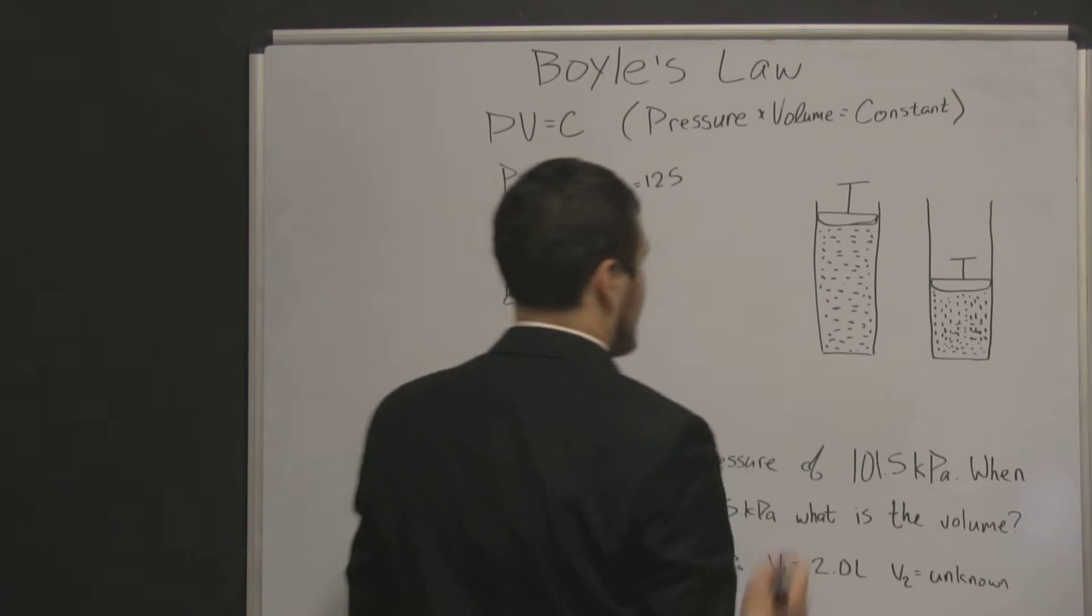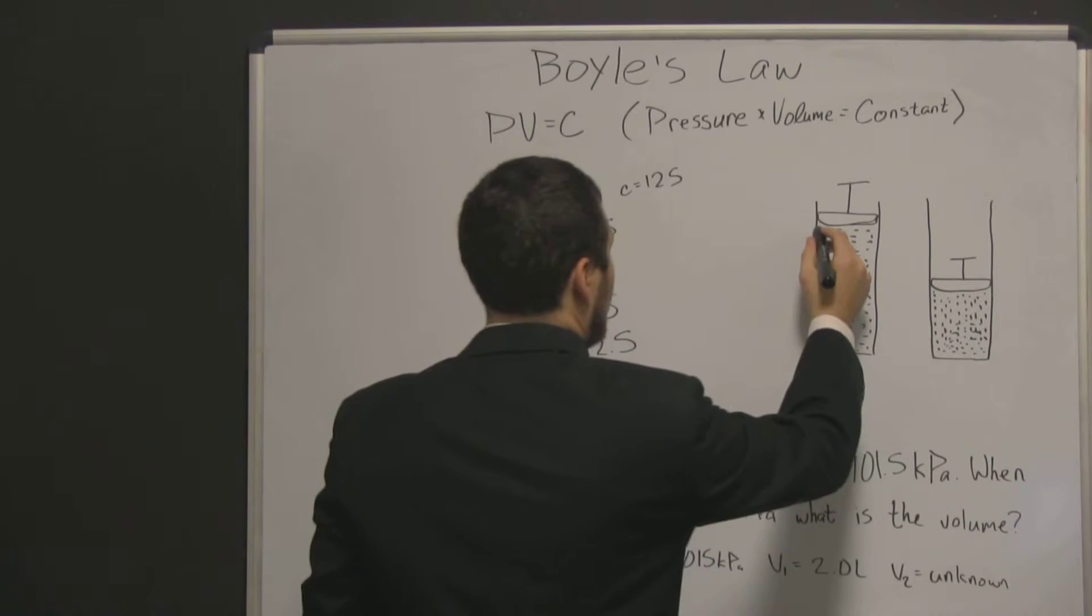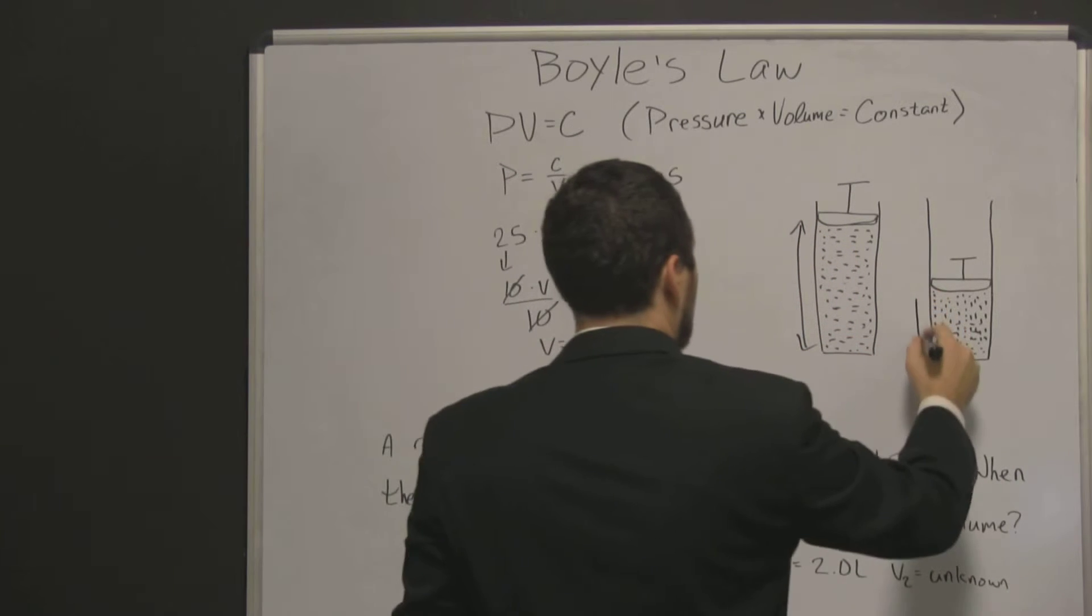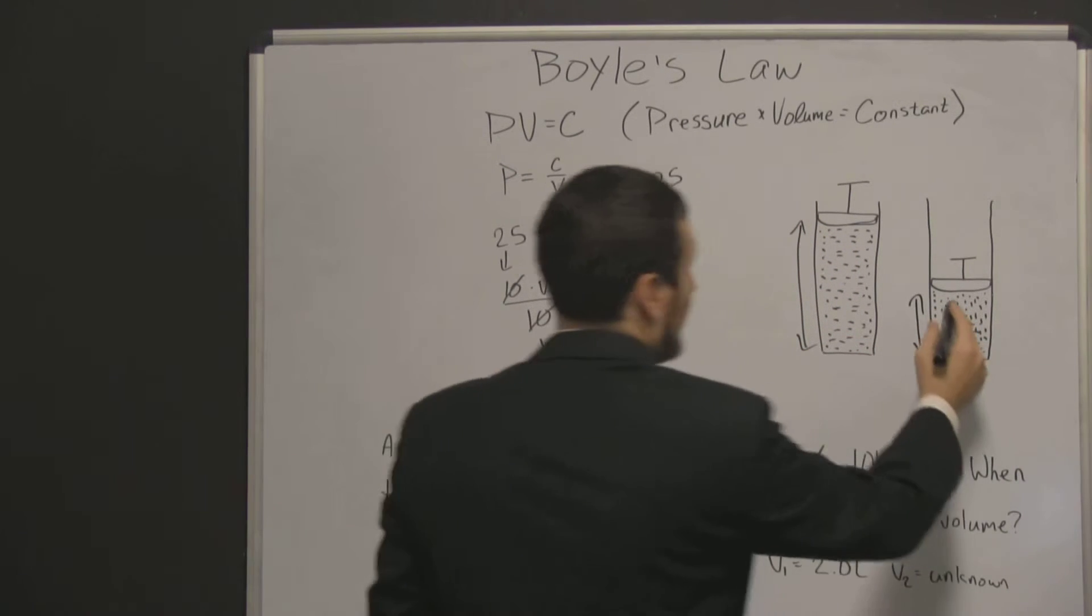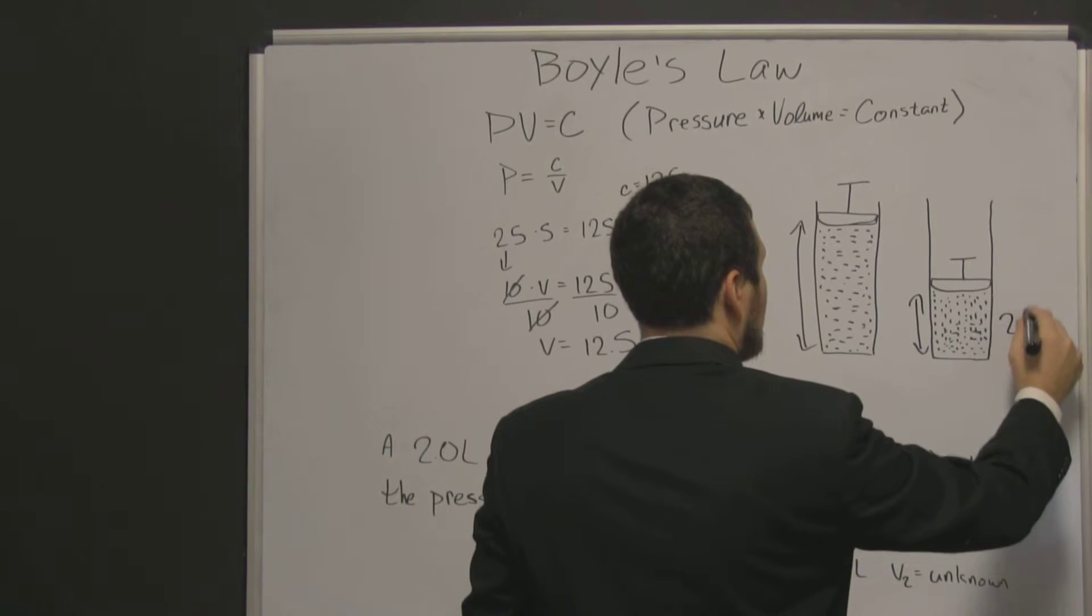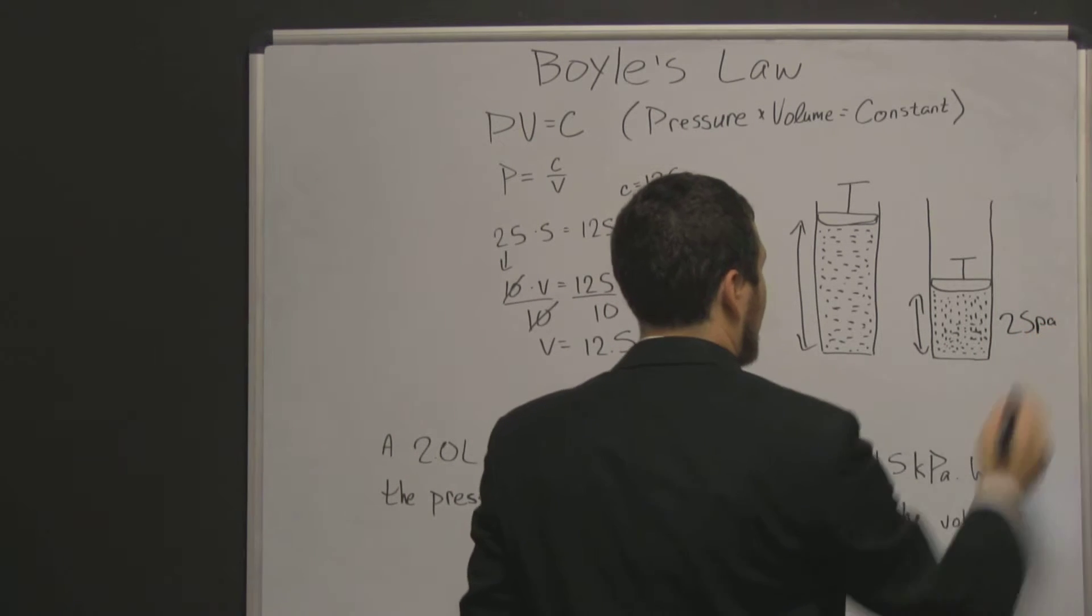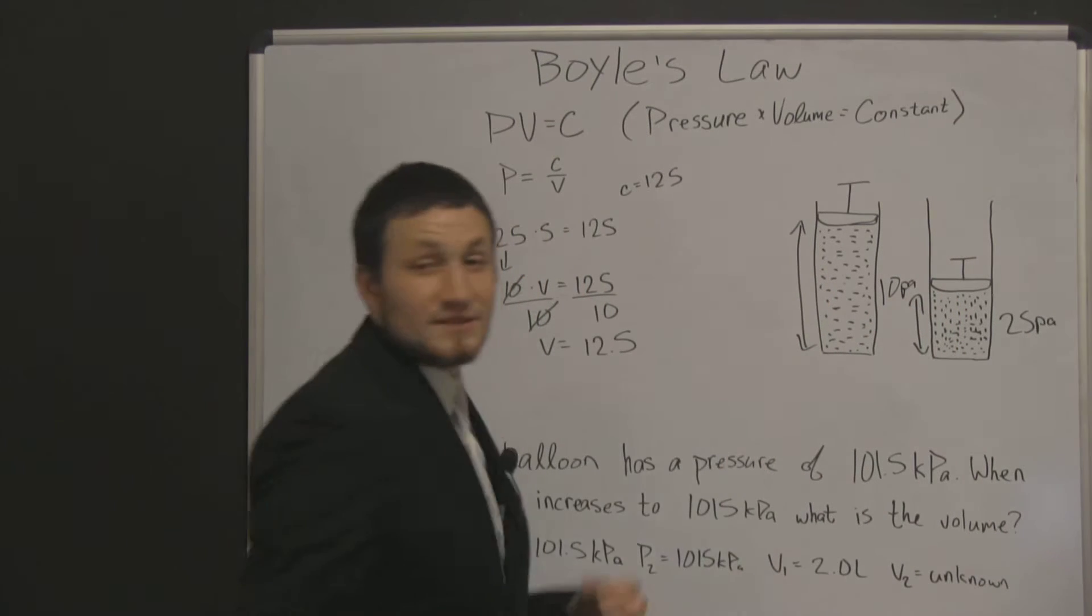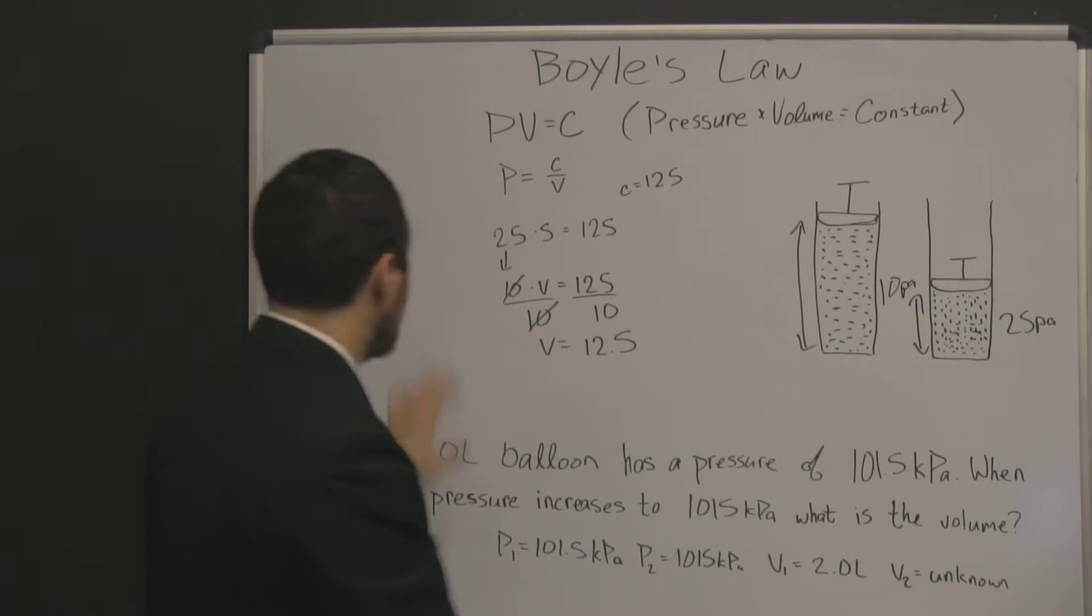That can be depicted over here in this image here. We have our initial one, so in this case we have a high pressure, this is 25 pascals. And over here our pressure dropped, but our volume increased significantly. So that is an overview of Boyle's Law.